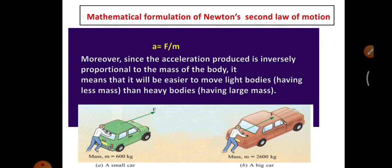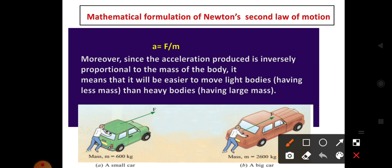Since acceleration is inversely proportional to mass, it will be easier to move light bodies having less mass than heavy bodies having large mass. For example, we can move a 600 kg car more easily than a 2600 kg car.